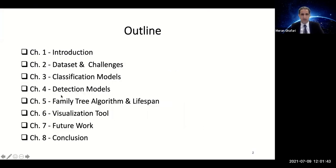The outline covers Chapter 1 Introduction, Chapter 2 Dataset and Challenges, Chapter 3 Classification Models, Chapter 4 Detection Models, Chapter 5 Family Tree Algorithms and Lifespan, Chapter 6 Visualization Tools, and Future Work and Conclusion covered in Chapter 8.